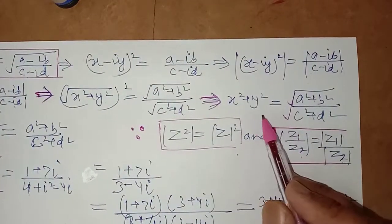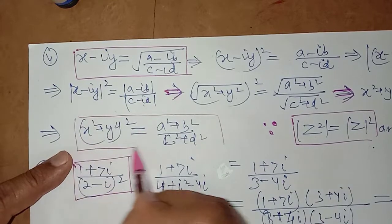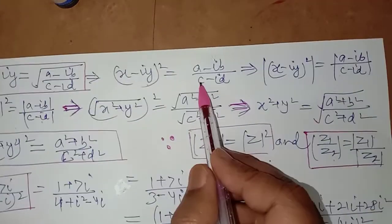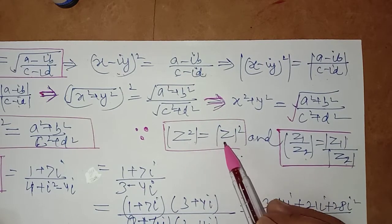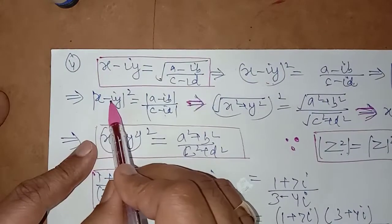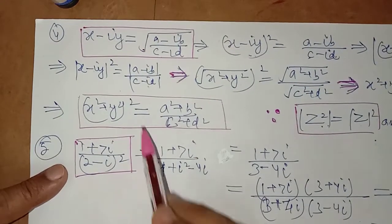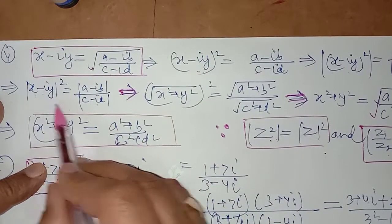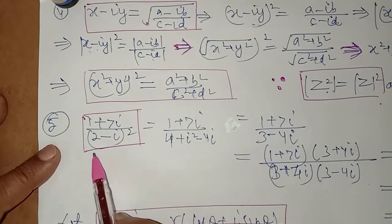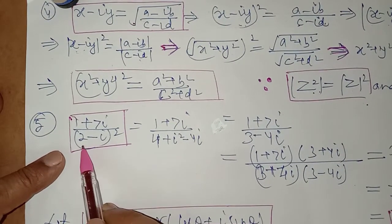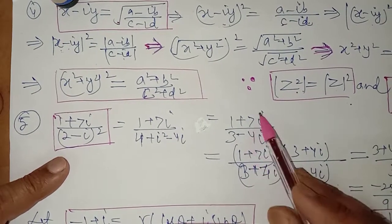To summarize the key steps of question 4: first, square both sides to remove the square root; then take modulus on both sides. Use the property that modulus of z² equals modulus z squared, and modulus of z1 upon z2 equals modulus z1 upon modulus z2. We know modulus gives under root x² plus y², and under root a² plus b², and under root c² plus d². Squaring both sides gives the required result. Then for the next part, find the whole square of the denominator, rationalize by multiplying by the conjugate of the denominator, getting minus 1 plus i in standard a plus ib form.